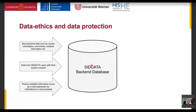If users provide person-relatable information — for example an email address or their name on the learner-to-learner ID card — that information gets anonymized through an encryption algorithm, so it's not stored in human-readable form on the back end. Even if someone gains access to the server, unless they have admin rights they won't be able to read what kind of emails have been provided.